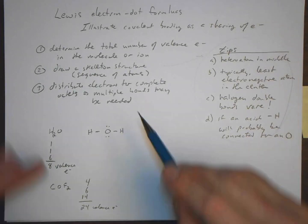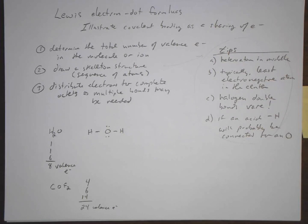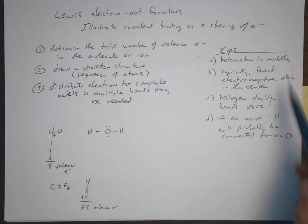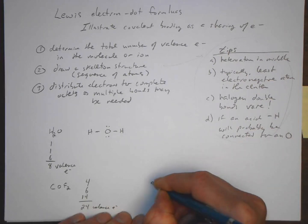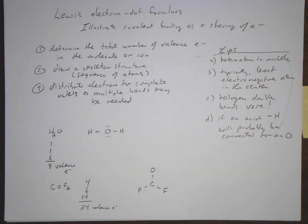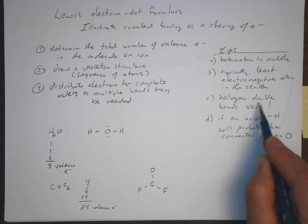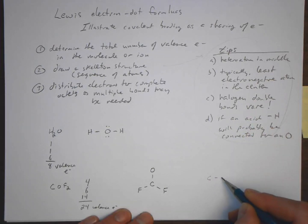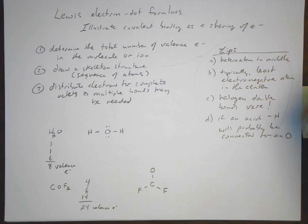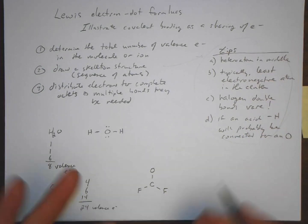Now we draw the skeleton structure. We have carbon, oxygen, and two fluorines. Using our tips, we put the least electronegative atom — carbon — at the center. Double bonds to halogens are very rare, so a structure with fluorine double bonds would probably be incorrect. Starting with carbon in the center bonded to oxygen and the two fluorines is a good place to begin.